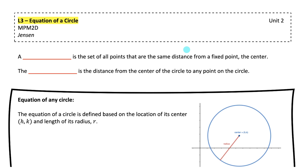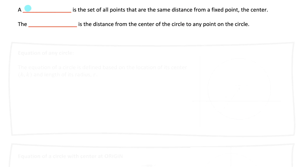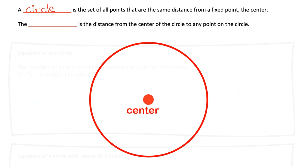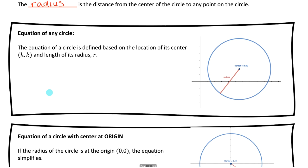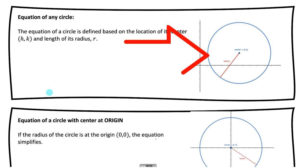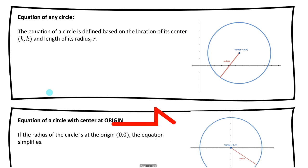Here's lesson three of the second unit. This lesson is on the equation of a circle. A circle is the set of all points that are the same distance from a fixed point, which we call the center of the circle. The radius is the distance from the center to any other point on the circle. I'll show you the equation of a circle not centered at the origin, and one centered at the origin, then give a detailed explanation as to why the equation describes the relationship between any XY point and the radius.